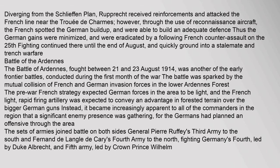Diverging from the Schlieffen Plan, Ruprecht received reinforcements and attacked the French line near the Trouée de Charmes. However, through the use of reconnaissance aircraft, the French spotted the German build-up and were able to build an adequate defence. Thus the German gains were minimised and were eradicated by a following French counter-assault on the 25th. Fighting continued there until the end of August and quickly ground into a stalemate and trench warfare.